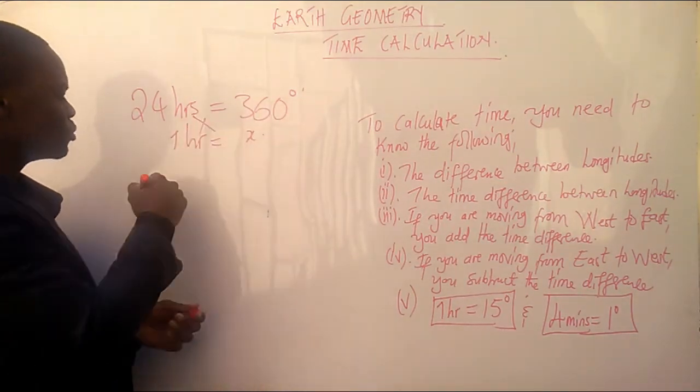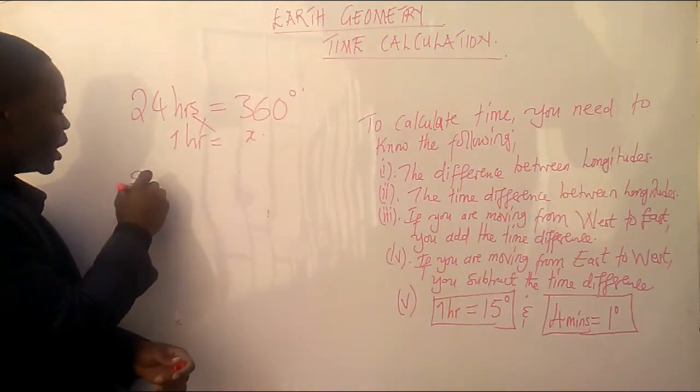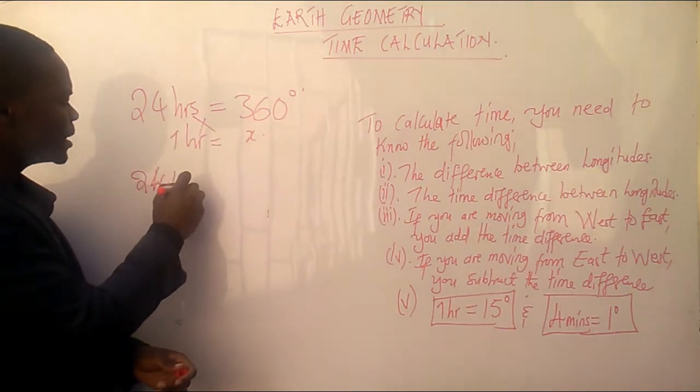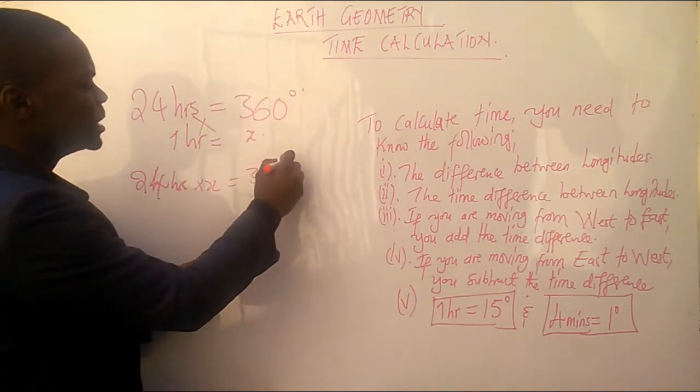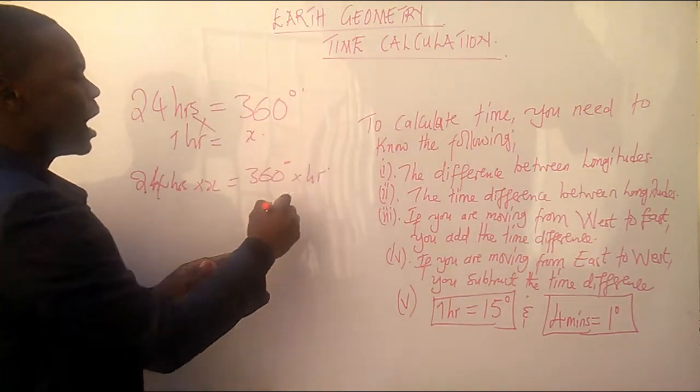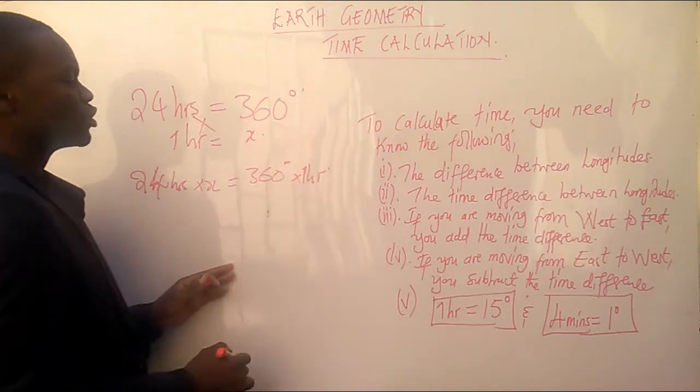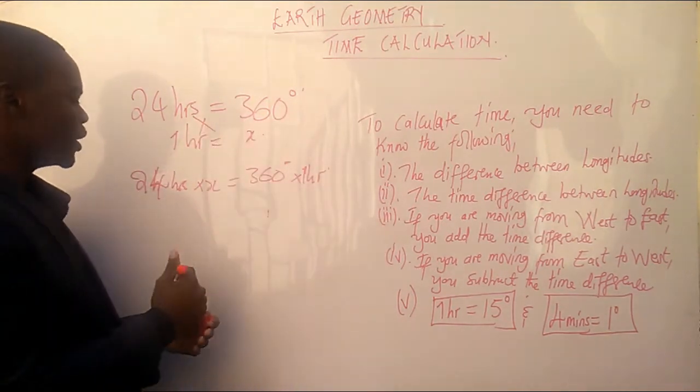Very simple. So from here, we can cross-multiply. So, 24 hours times x equals 1 hour times 360 degrees. Like this. Okay. So, I have just showed what I have done here.